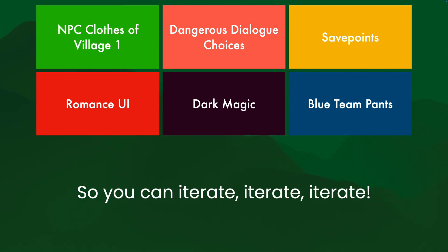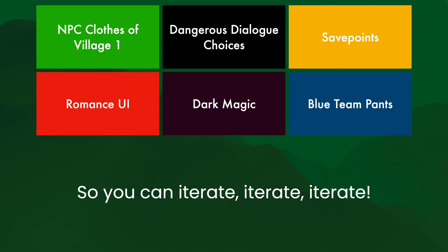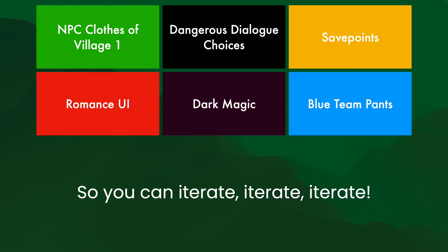Or dangerous dialogue choices need to be clear that they're super dangerous. Or the blue team pants need to be lighter. Facilitating that kind of iteration is super duper important.